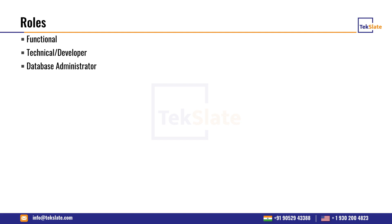The functional person understands the business requirement of the client from a business perspective, and also has some technical knowledge so they can communicate with technical people and developers. Technical people or developers are more into coding — they develop the custom things the client wants, working alongside the functional team.